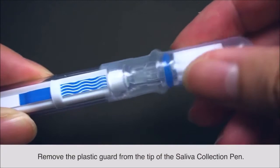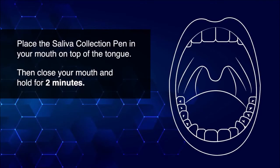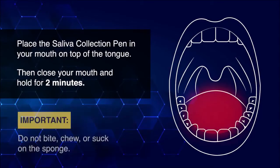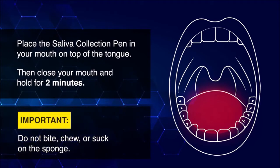Remove the plastic guard from the tip of the saliva collection pen. Place the saliva collection pen in your mouth on top of the tongue. Then close your mouth and hold for two minutes. Do not bite, chew, or suck on the sponge.